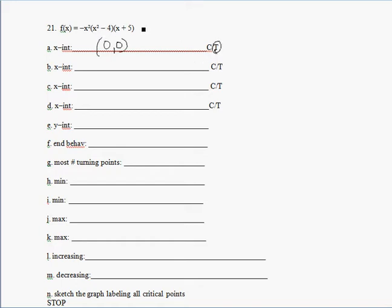This is x squared minus 4. So let's rewrite this function as x minus 2 times x plus 2 times x plus 5. So now I have another x-intercept at 2, 0. And since it's an odd power, it crosses. And this is negative 2 comma 0, it also crosses. And negative 5 comma 0, that also crosses.